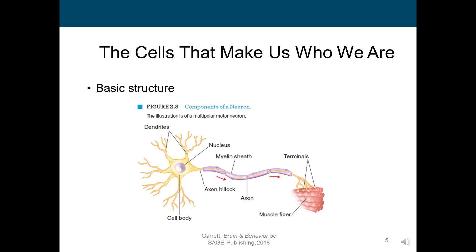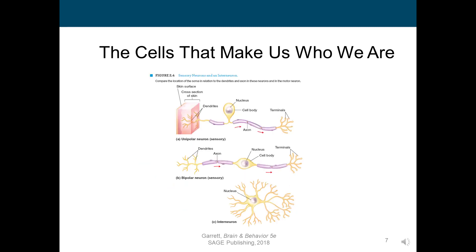If you follow the axon all the way down, you'll see these branches at the end of the axon and you'll see the swelling — these are the axon terminals. The axon terminals contain neurotransmitters, which is how neurons communicate with one another. Neurons never directly connect; they release neurotransmitters across the synapse, or across the spaces between neurons, in order to communicate.